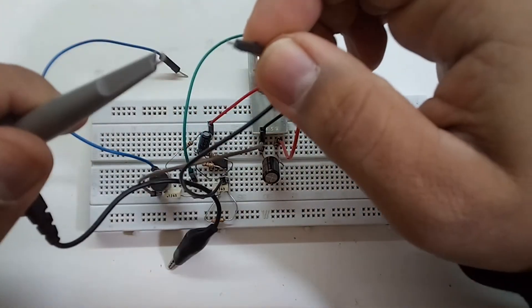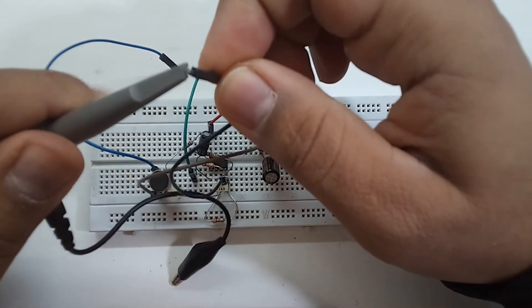Now we connect the output wire to the probe of the oscilloscope and the ground.